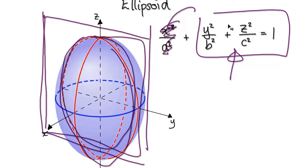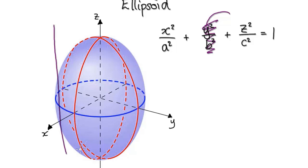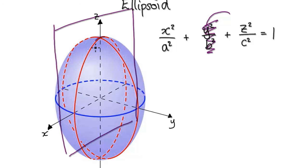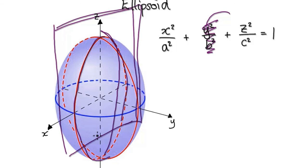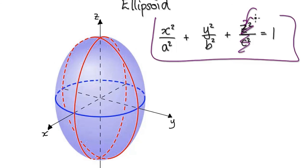When you put 0 into y, this term disappears. You've got to imagine a vertical sheet of paper like this. Again, you're going to get a circle or an ellipse along this plane.